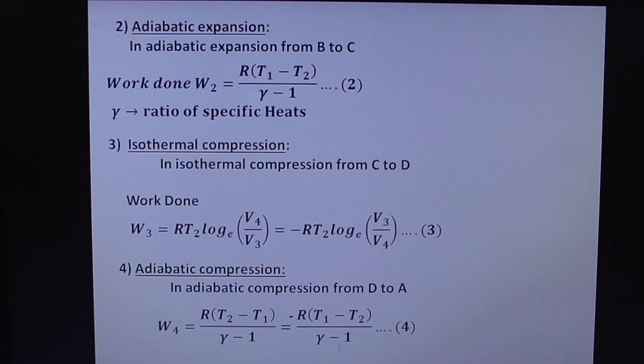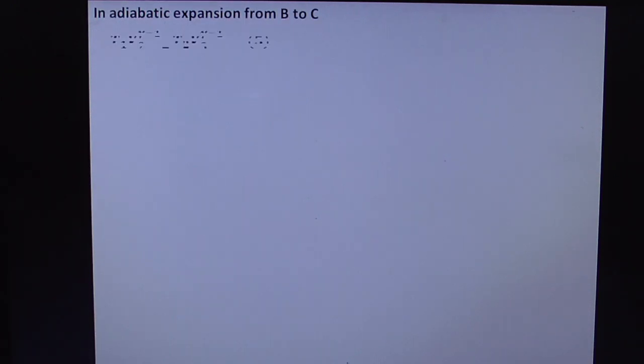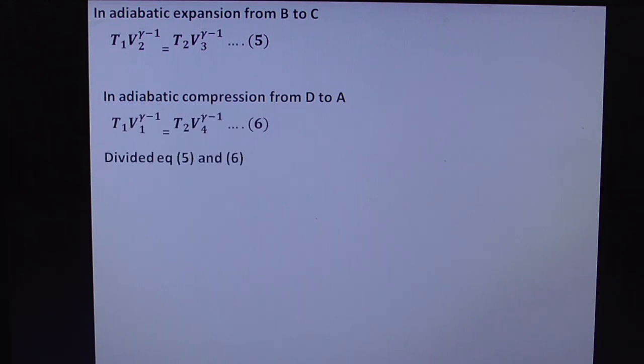Observe the difference here. In adiabatic expansion from B to C, we have to take T₁V₂^(γ-1) = T₂V₃^(γ-1), and from D to A, T₁V₁^(γ-1) = T₂V₄^(γ-1). Now here T₁/T₂ we get in terms of the ratio in terms of volumes, so that is V₂/V₁ = V₃/V₄.